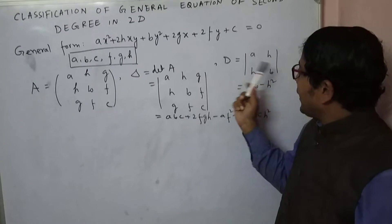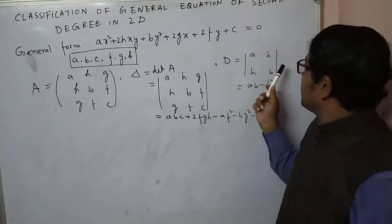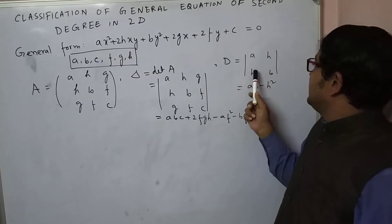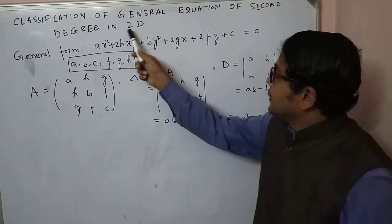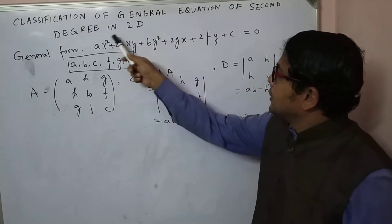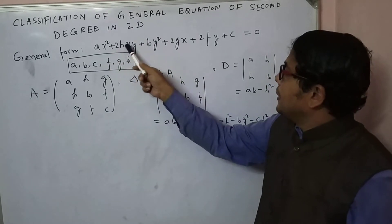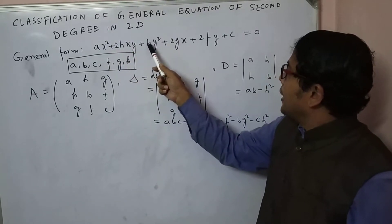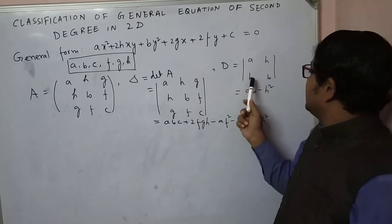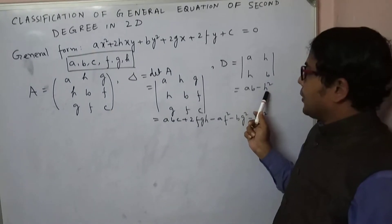We also find another determinant — the 2×2 determinant D formed from the coefficients involving the second degree terms A, H, and B. Its value is D = AB − H².